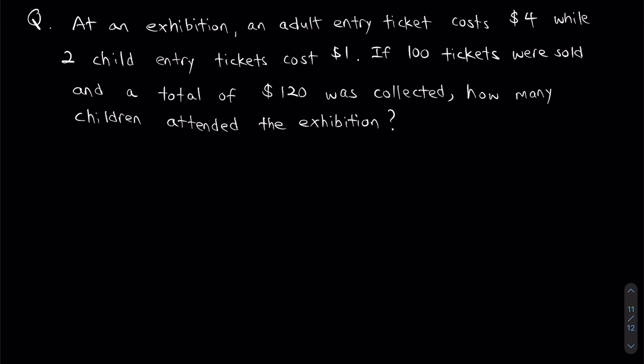So, how do we start? We will either assume that everyone who entered the exhibition was an adult, or everyone was a child. In this case, I'm going to assume that everyone is an adult. We know that 100 tickets were sold and each adult ticket costs $4, so if everyone was an adult, the exhibition would have made $400.